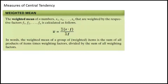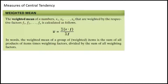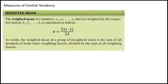On that last problem I called it a weighted average, but really a weighted mean — mean and average are really the same type of instrument. The weighted mean of n numbers x1, x2, all the way to xn, weighted by respective factors f1, f2, fn, is calculated as: whatever your x value is times your frequency, divided by the sum of all the frequencies. In words: the weighted mean is the sum of all products of items times weighting factors, divided by the sum of all weighting factors.